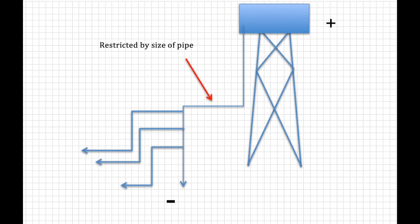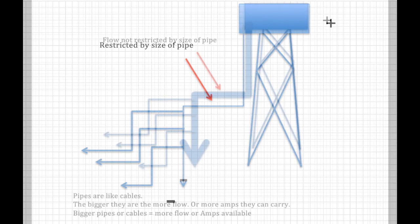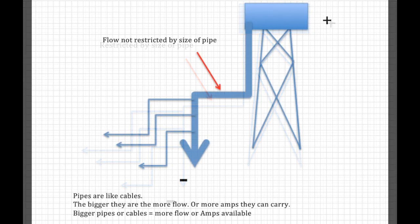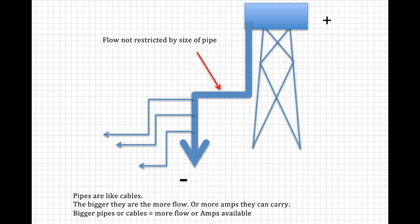However, if you make the pipe bigger, you allow more flow. So all the appliances will work. Well those pipes are like cables. The bigger they are, the more flow, or the more amps they can carry. Bigger pipes or cables equals more flow. More amps available.